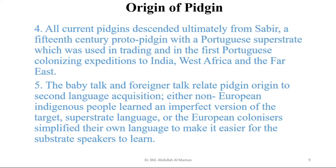All current Pidgins descended ultimately from Sabir, a 15th century proto-Pidgin with a Portuguese superstrate, which was used in trading and in the first Portuguese colonizing expeditions to India, West Africa, and the Far East. Portuguese was one of the first colonizers in India, West Africa, and Eastern countries. So the Pidgins developed from a Portuguese superstrate, and this was called Sabir, which was a proto-Pidgin.